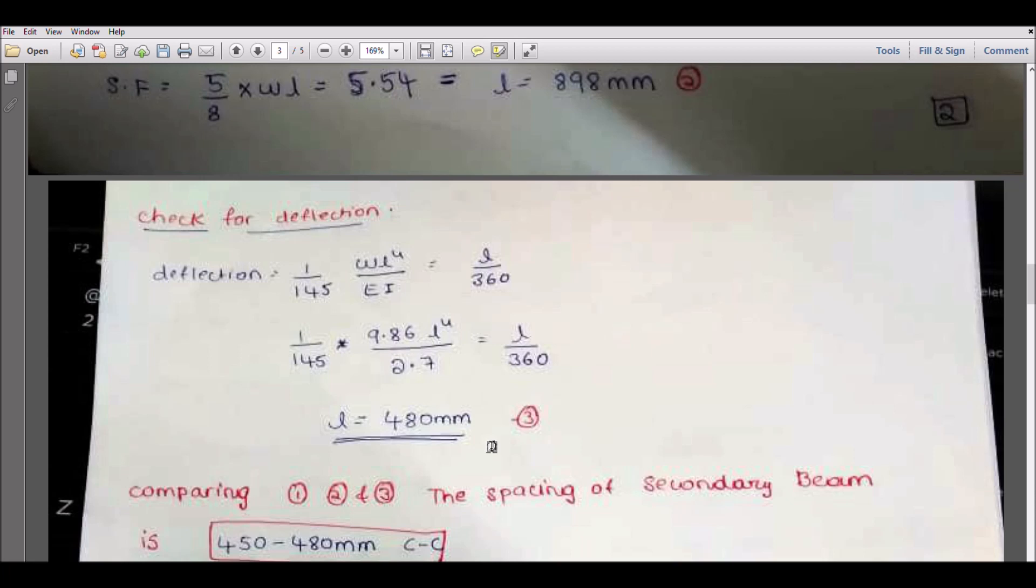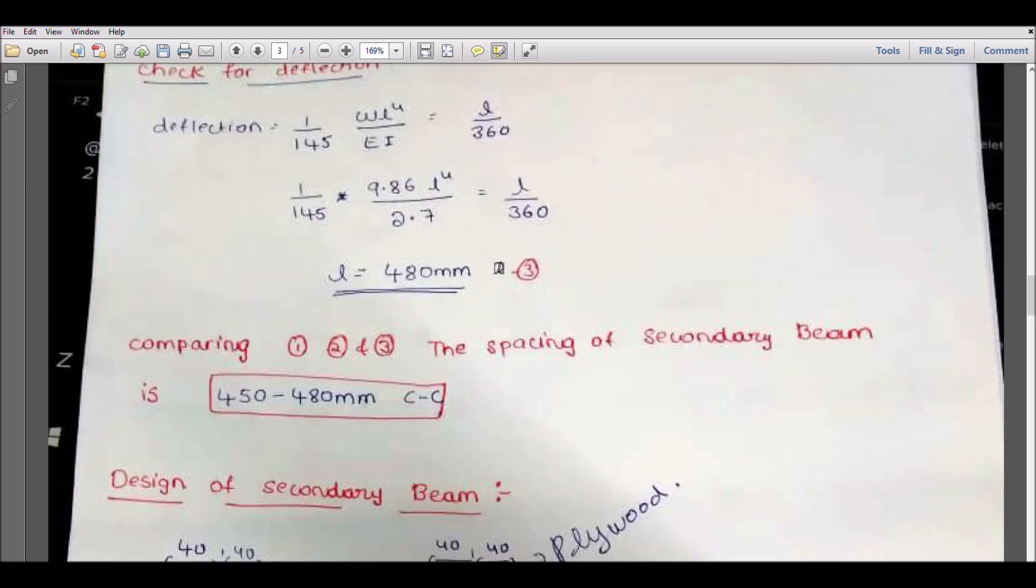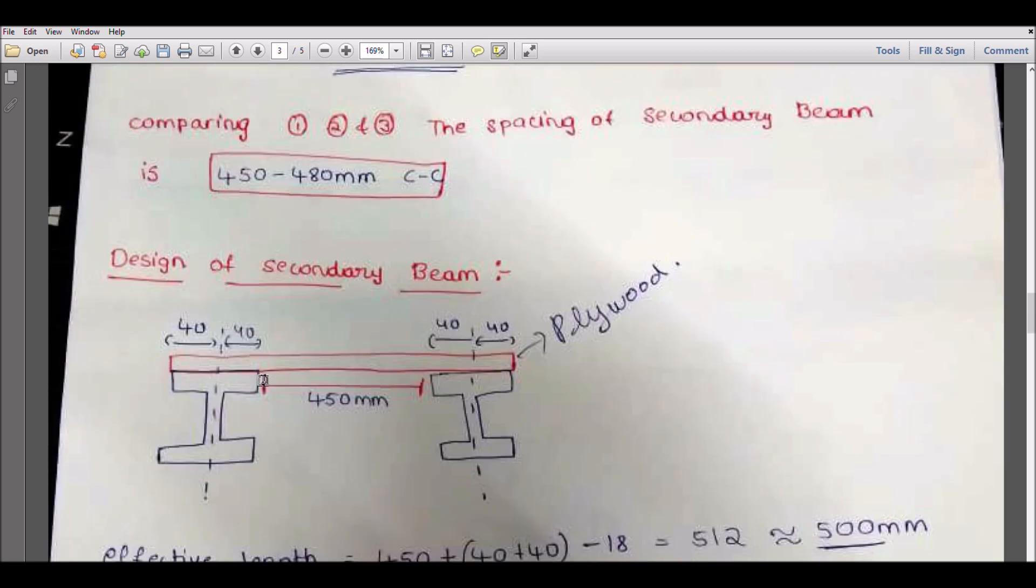You got three lengths. In that, you have to choose the minimum because in the minimum, all three cases we need to sustain. So in these three, minimum I will consider 480mm. You might consider less than that, 450 to 480, based on your site conditions.